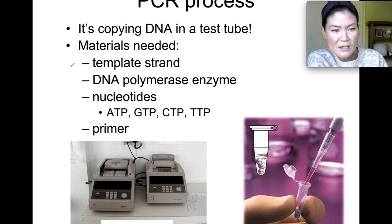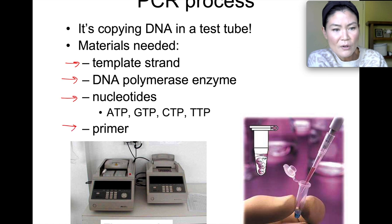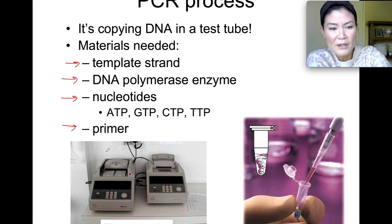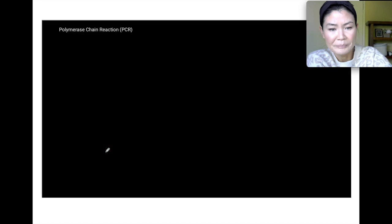These are the materials you need: a template, the DNA polymerase, the nucleotides, and the primer. You put them in the little thermocycler machine. They're pretty small — they can just fit on a small desk. Within hours, you're going to get many copies of DNA.